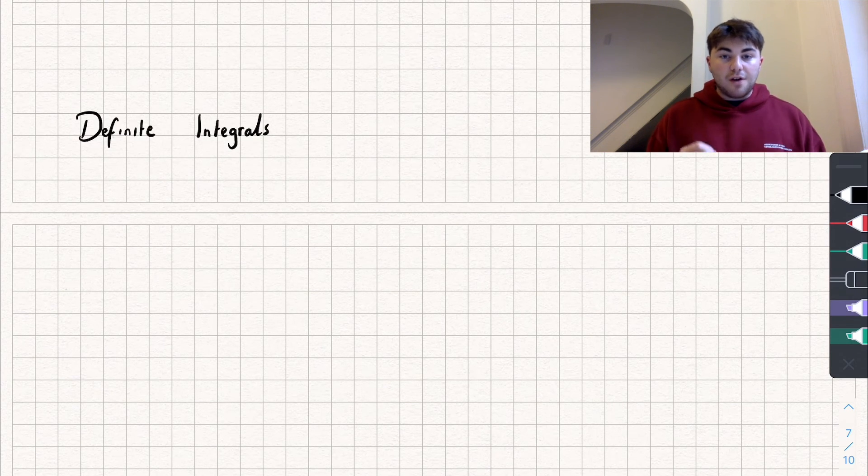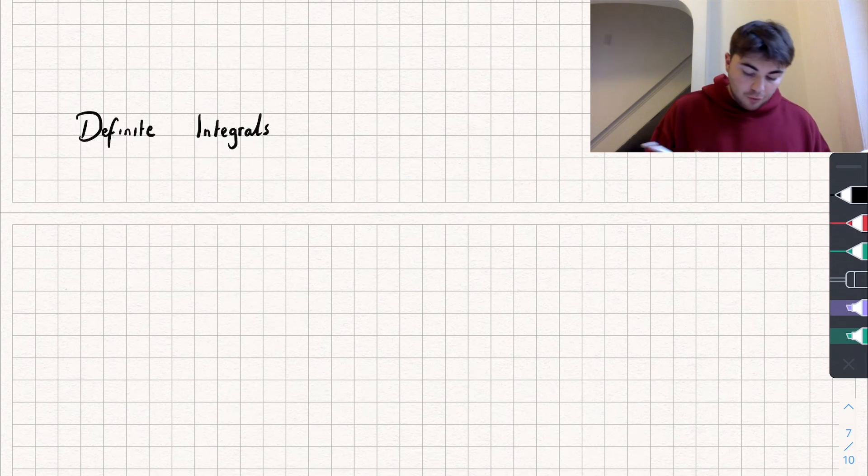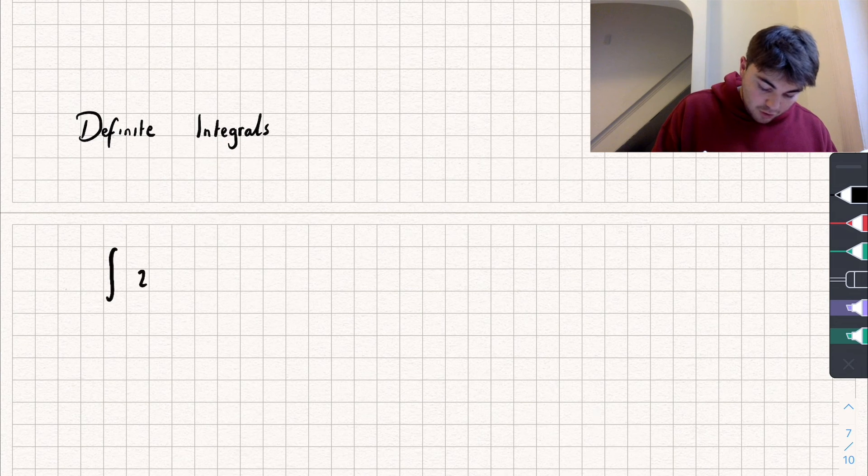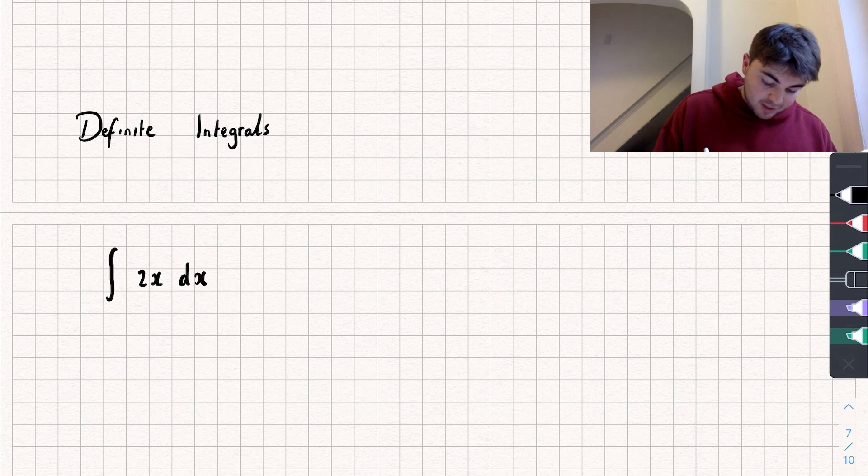So a definite integral is very similar to just integrating something normally except it has what we call limits on the integral. So for example, say we wanted to integrate 2x with respect to x, a nice easy integral.